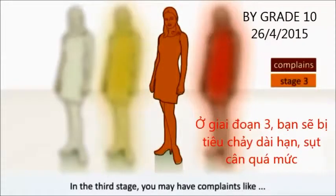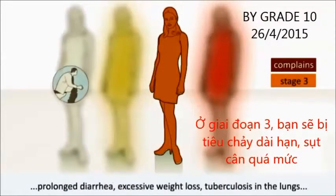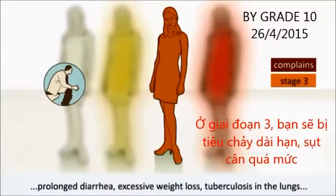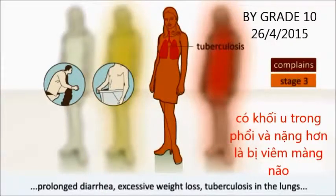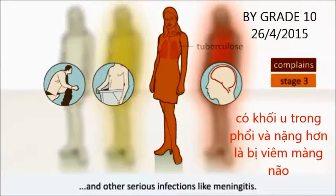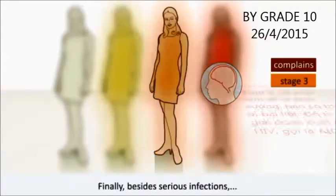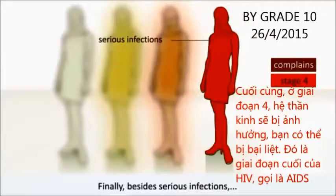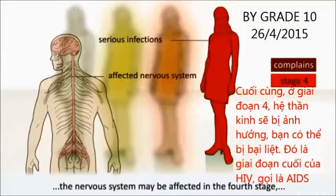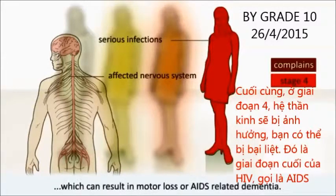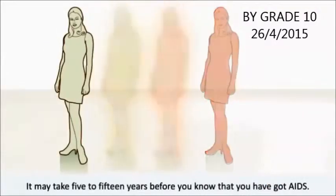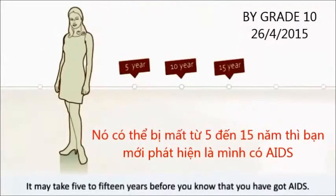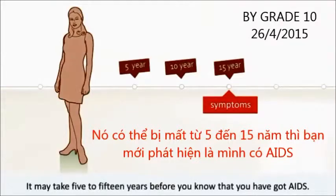In the third stage, you may have complaints like prolonged diarrhoea, excessive weight loss, tuberculosis in the lungs, and other serious infections like meningitis. Finally, besides serious infections, the nervous system may be affected in the fourth stage, which can result in motor loss or AIDS-related dementia. It may take five to fifteen years before you know that you've got AIDS.